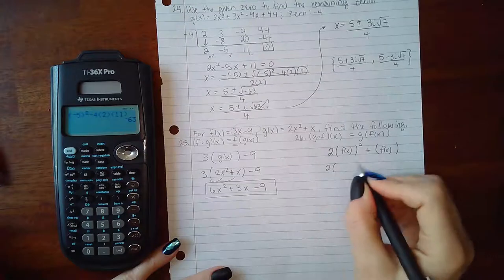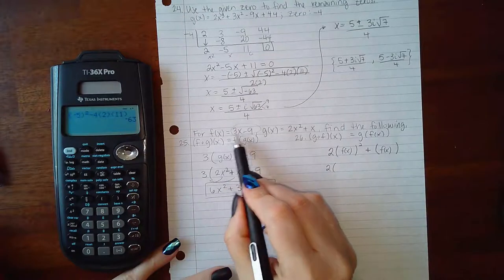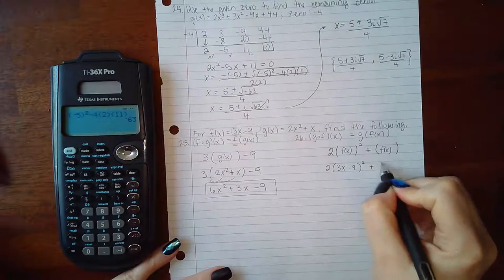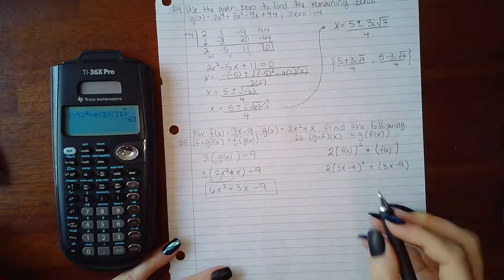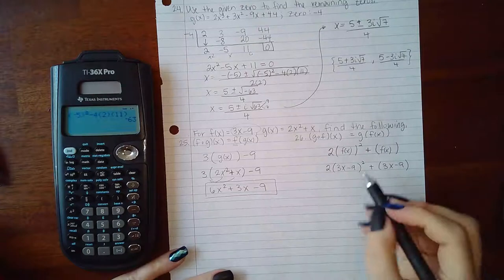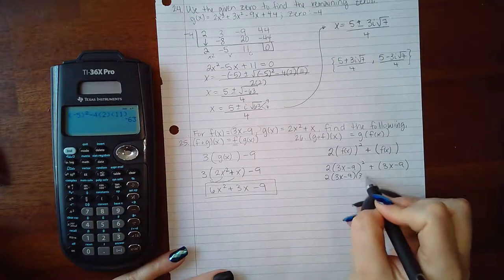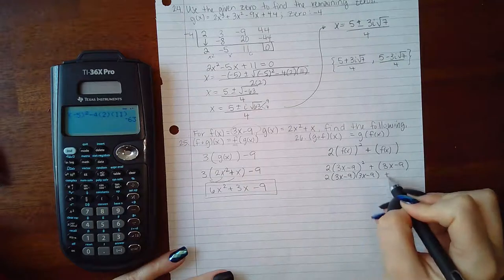But what is f of x? f of x is equivalent to 3x minus 9. And then here I do have to do some simplifying. In order for me to square a binomial that means to take that binomial and multiply it to itself.